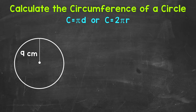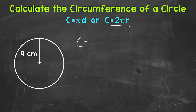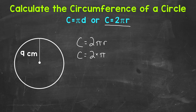Let's jump into our example where we have a circle with a given radius of 9 centimeters. The first thing I'm going to do is write out our formula. We're going to use circumference equals 2 pi r, so 2 times pi times r, since we are given the radius. So circumference equals 2 pi r. Now we can plug in the radius.